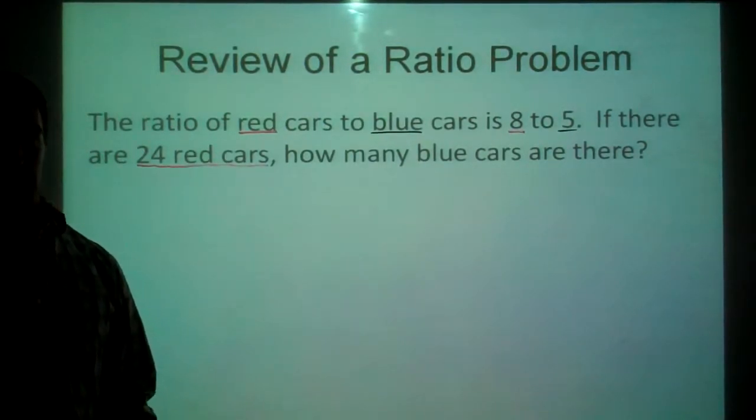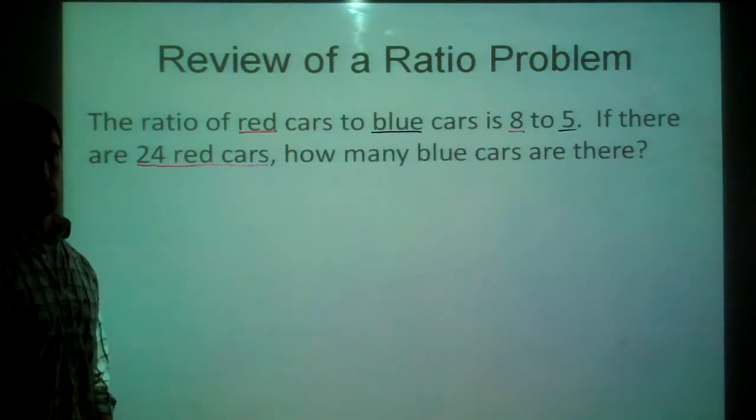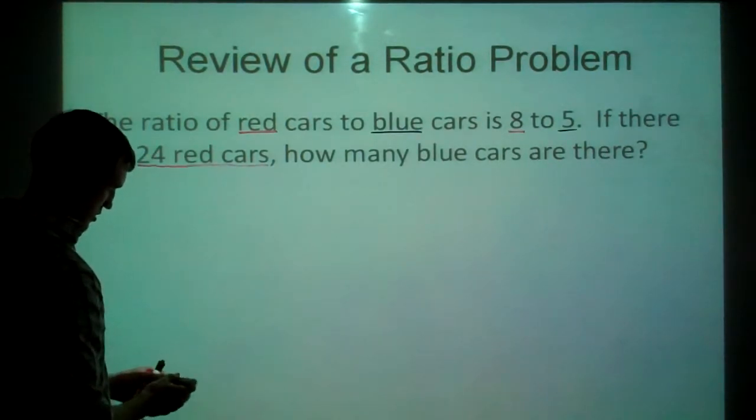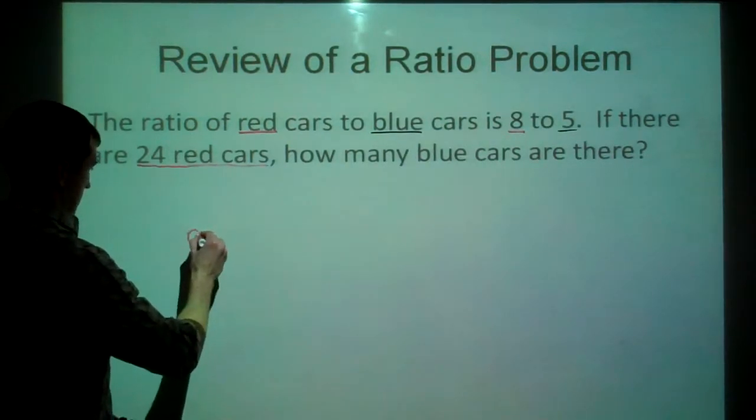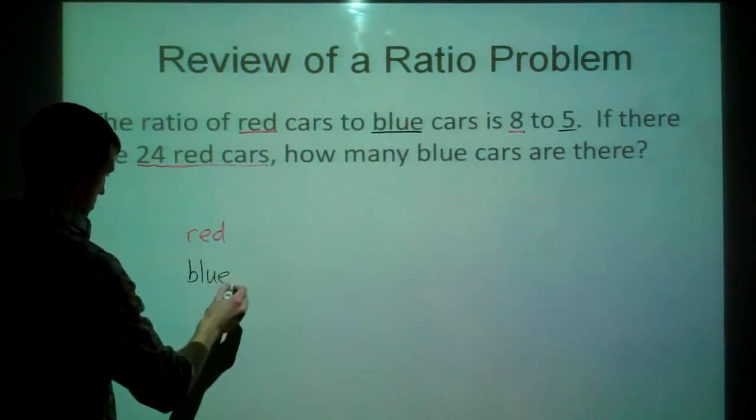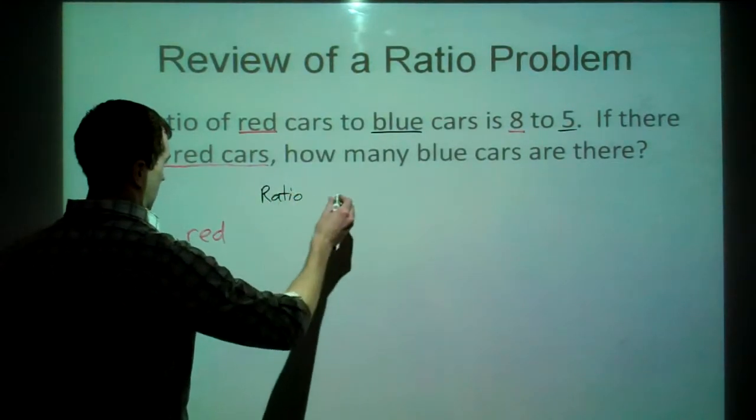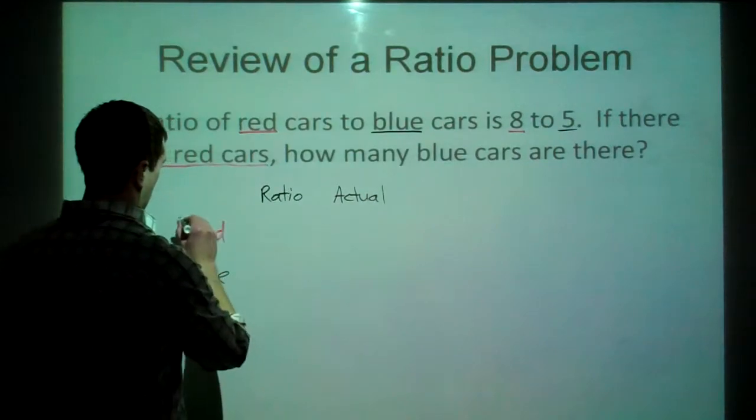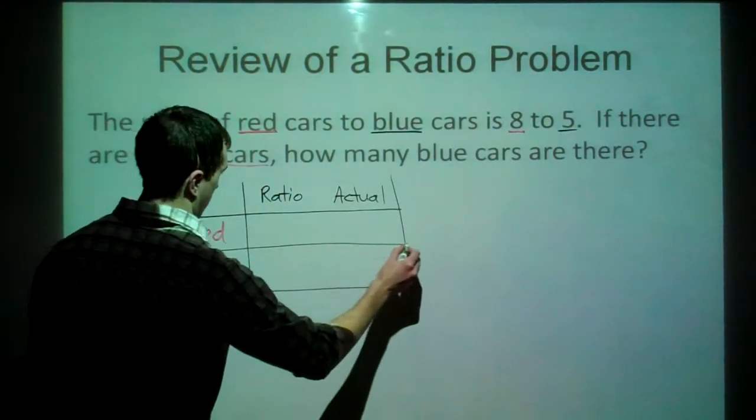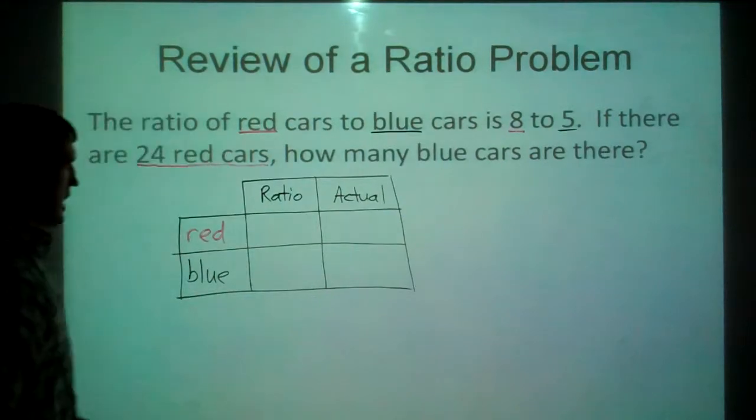But we'll see that more so when we set up a ratio table. There are a lot of ways to solve problems like these, but one thing that helps us set it up if we're not sure what to do is a ratio table. We're going to compare our ratio to our actual number of cars. So first of all, our topic is red cars to blue cars. So let's write our topic on the side here. So red to blue. And we're going to compare that in a ratio and as actual amounts. And what we have here is a table that helps us set everything up very nicely.